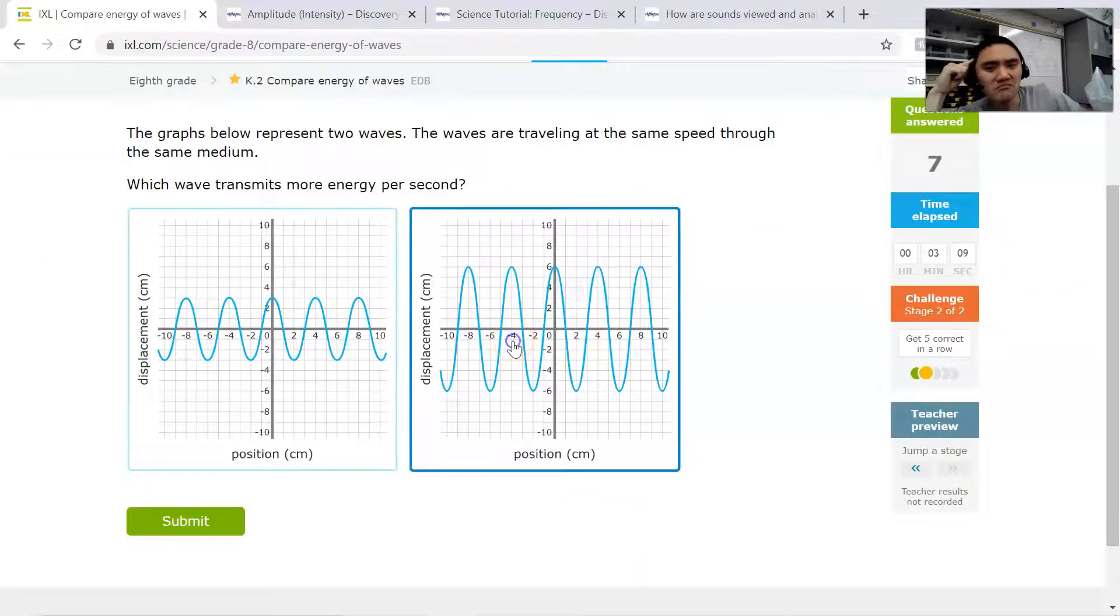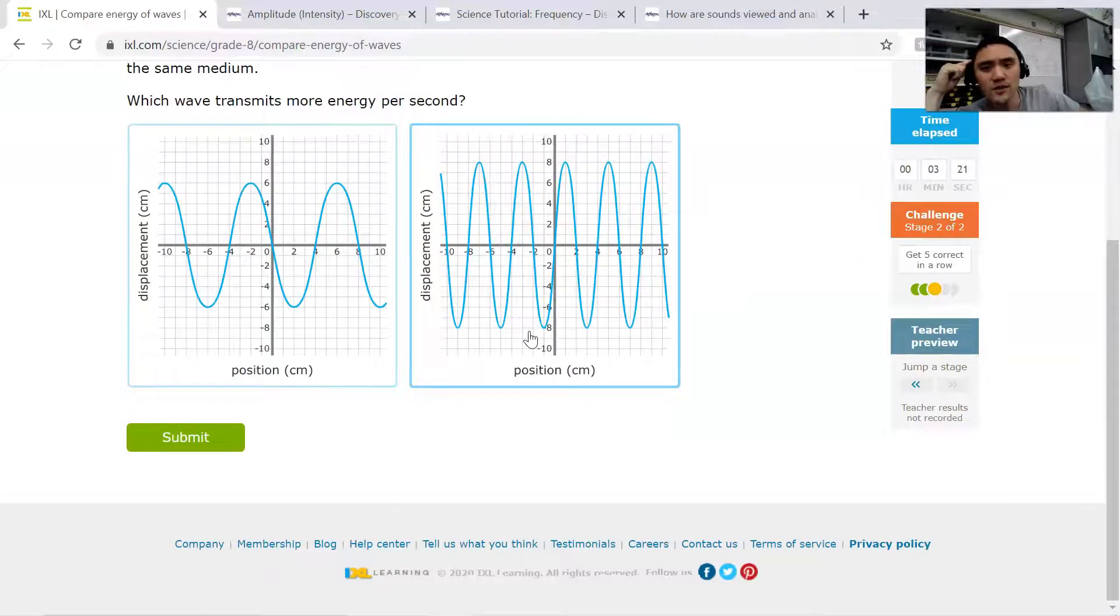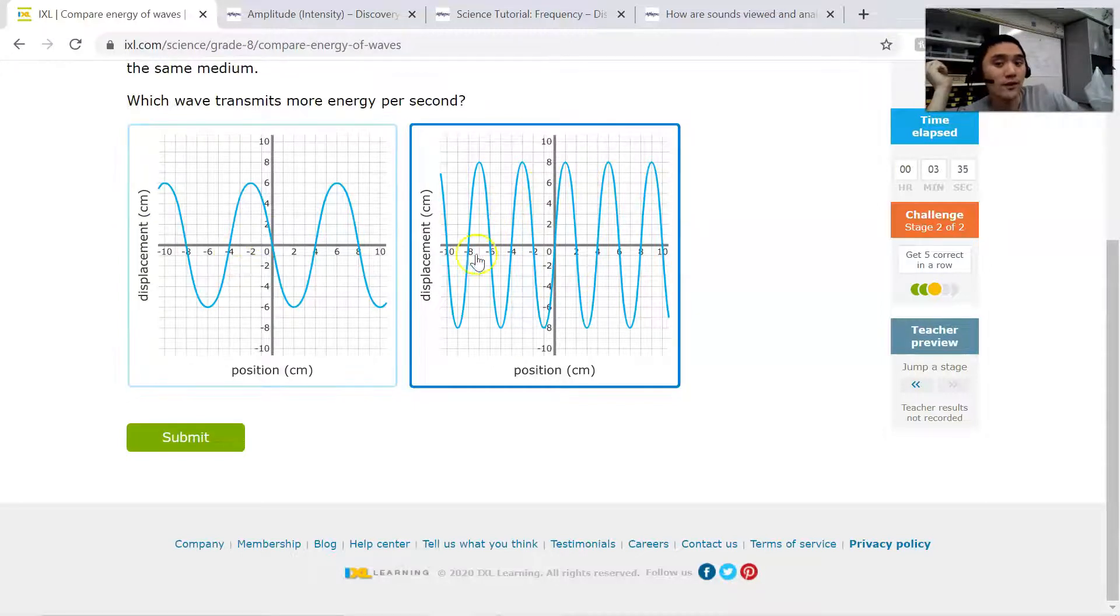For this one, I would hands down pick the second one because the number of troughs or the tips is five here and five there. But then this definitely has a higher height or more amplitude. So it would be the second one there. And then for this one, I'm just going to do one more and cut it. So which one has more energy? I would obviously go with this one because this one has more amplitude. The waves are taller. And this one has higher frequency because there's one, two, three, four, five versus two and a half there. So I'd pick this one for that one there.